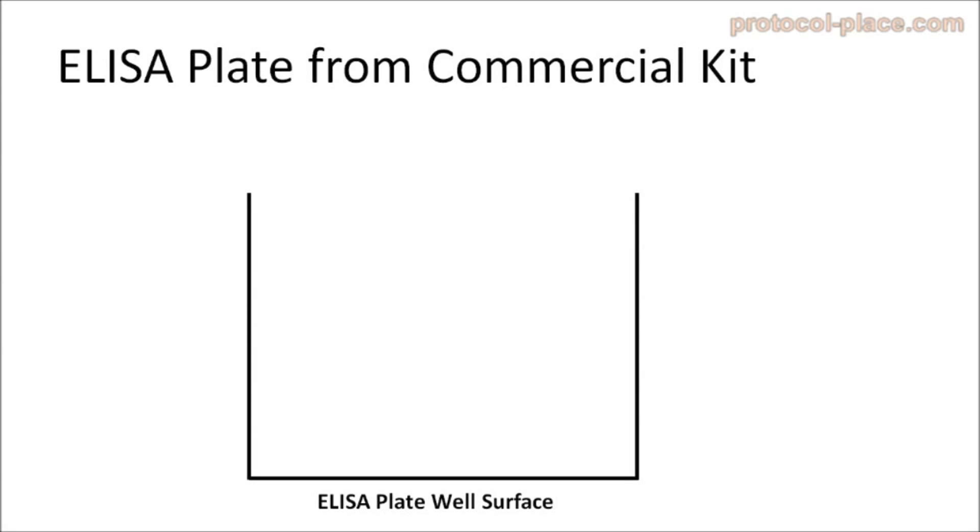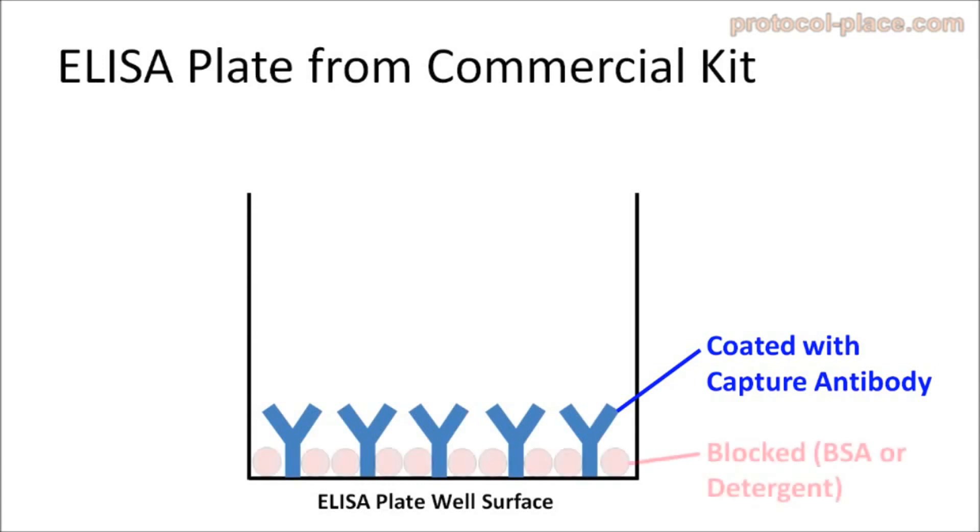Usually competitive ELISA kits will provide an ELISA plate which has already been coated with antibodies specific to the protein or metabolite to be measured. In all likelihood they have also already been blocked.